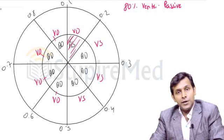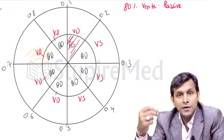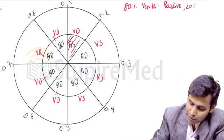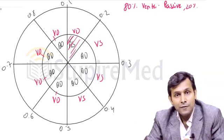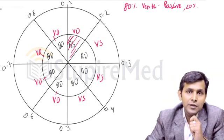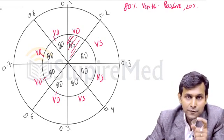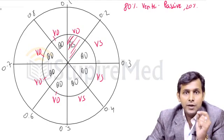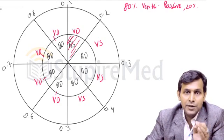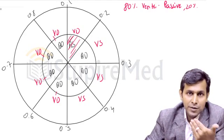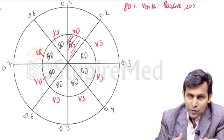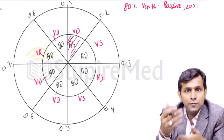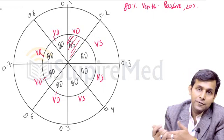The last 20% of ventricular filling is active, occurring because of atrial systole. In which condition will this last 20% active filling play a significant role? It plays a very significant role in increased heart rate or decreased cardiac cycle duration, because as heart rate increases the diastolic time keeps decreasing, so active filling keeps increasing. The 20% is at resting condition, but this may increase to 40%, 50%, or 60% under active conditions.